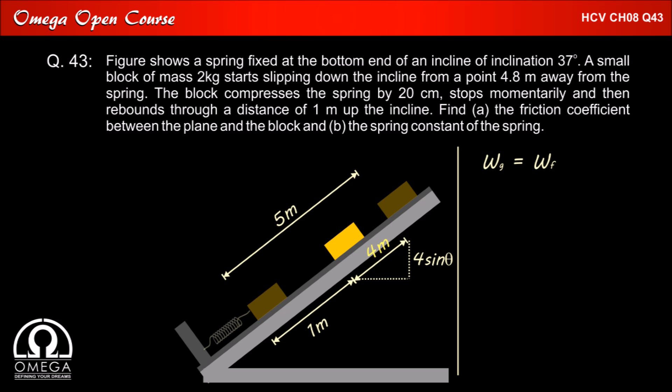Therefore the total work done by friction must cancel out the work done by gravity in bringing the block downwards. Which implies mg d1 sin theta is equal to mu mg d2 cos theta. Where d1 is the net displacement of the block down the incline which we can see is 4 meters. d2 is the total distance block moves on the surface i.e 6 meters.